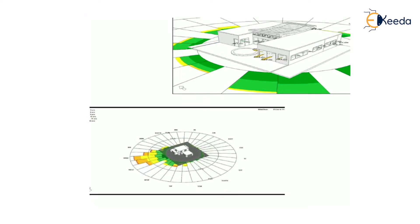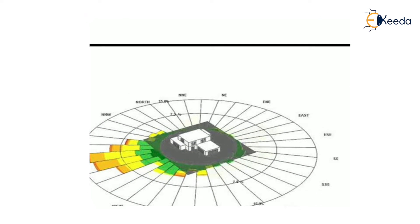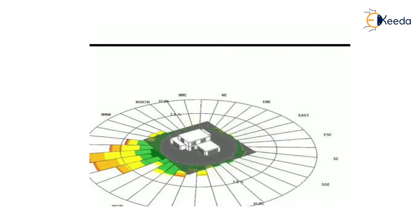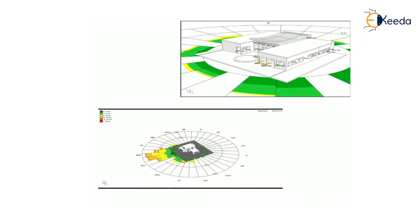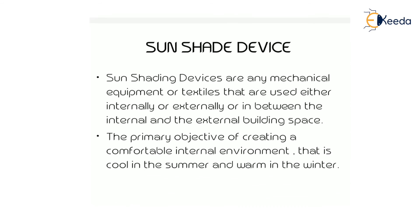Accordingly we can plan our building. For example, there is a plan of a building, and that circle indicates the wind rose diagram. Based on the house position, you can see the wind direction, and according to both the wind and sun you can plan or orient your building.